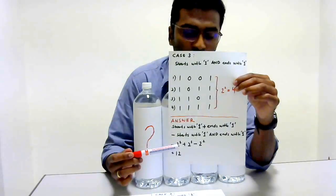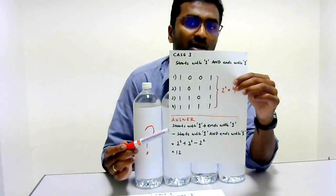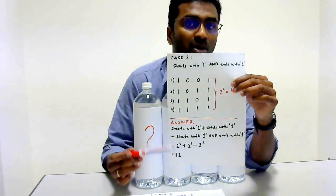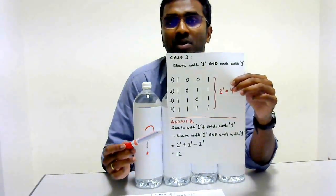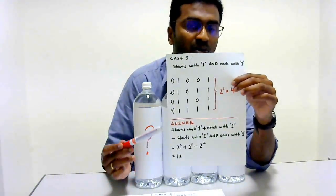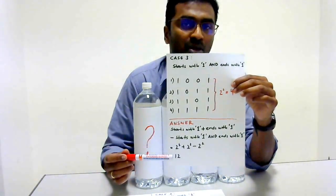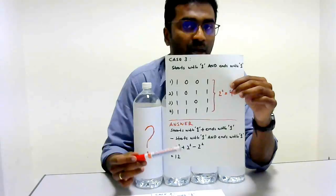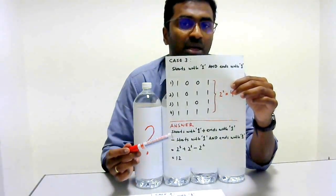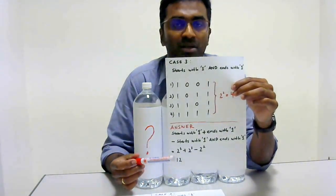So we are going to have 12 strings that start with 1 or end with 1 for 4-bit strings. This is one example of counting with the sum or principle with inclusion-exclusion. Thank you.